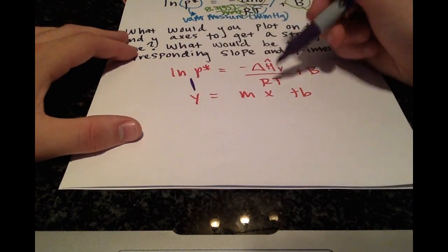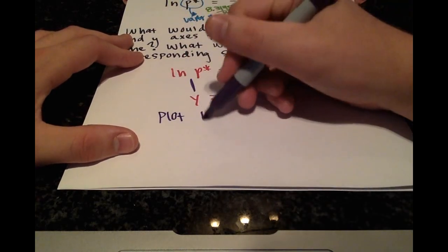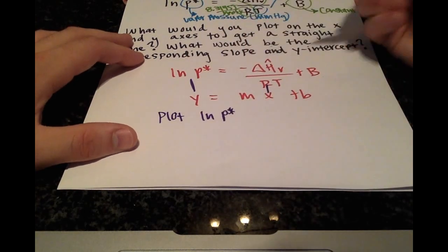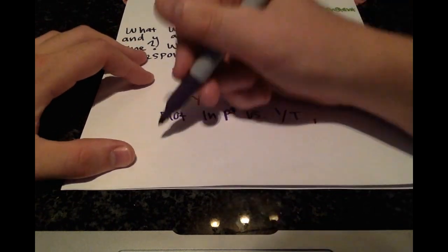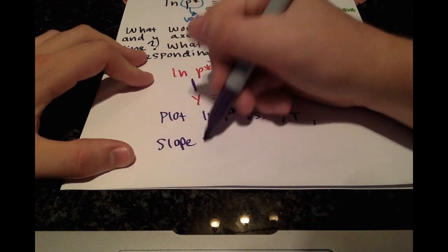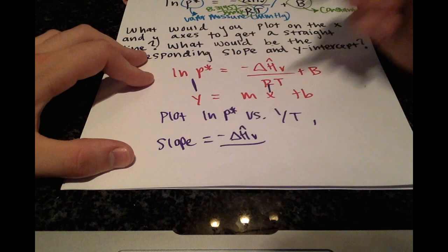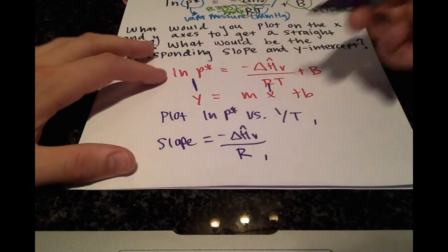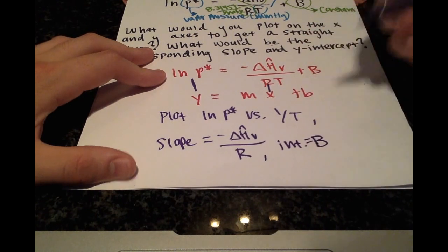We see that we have to plot the natural log of our vapor pressure versus 1 over t, and doing so gives us a slope of the negative latent heat of vaporization over R, and an intercept equal to b.